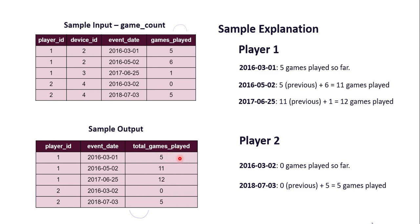Since we are applying the window function, we will also apply the PARTITION BY clause on player_id to ensure that our running sum calculation restarts for every player. Within the window function we will use the ORDER BY clause to order the data by event_date. Now we will write our SQL query in MySQL Workbench.